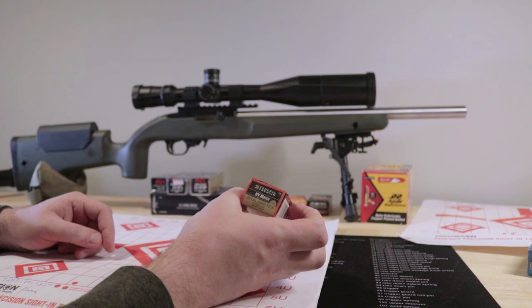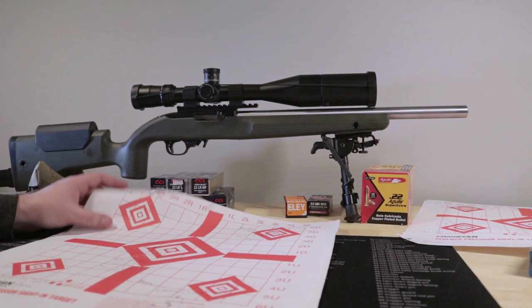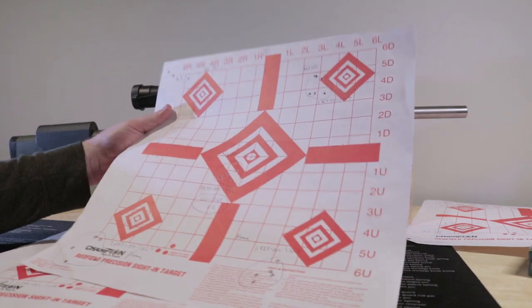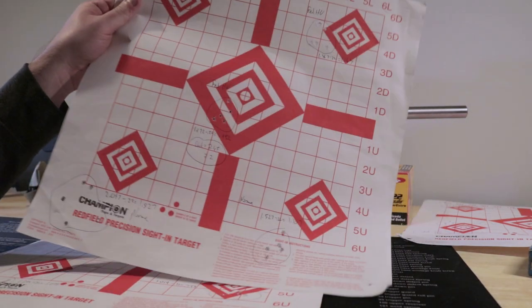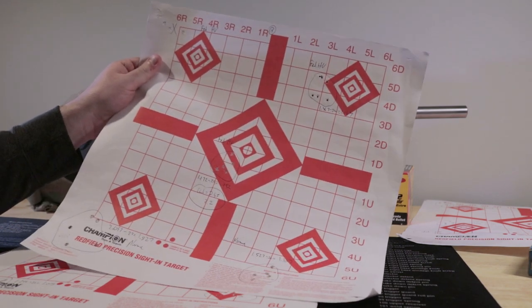I also shot this stuff. High velocity match from Federal, 40 grainers. In the last video with the stock barrel, that was getting 2.5, 3 inches.